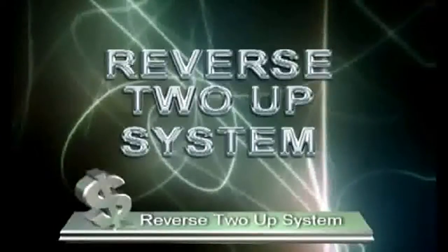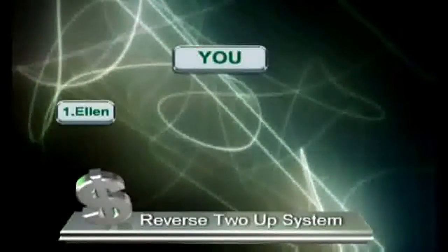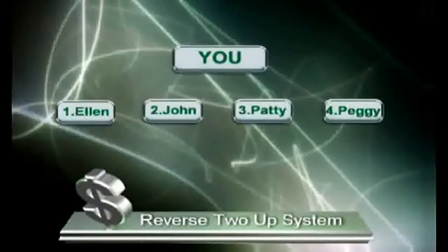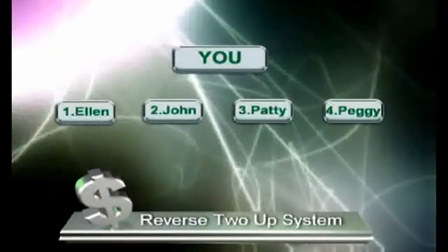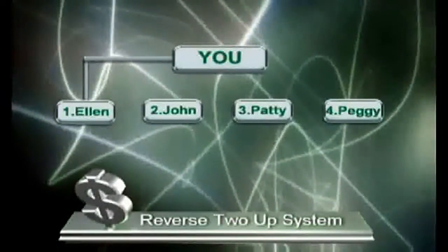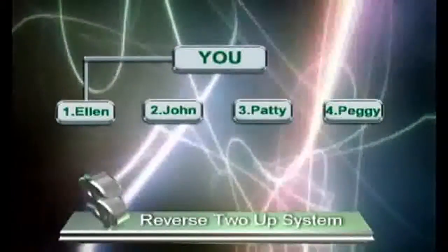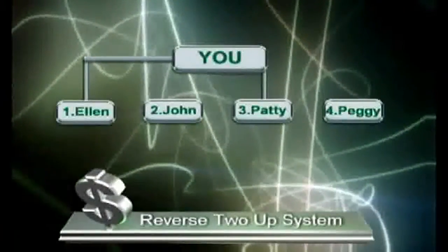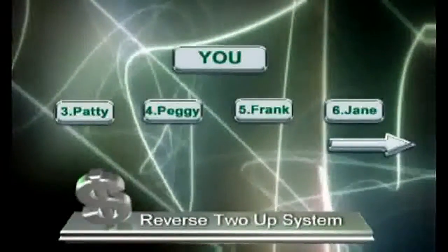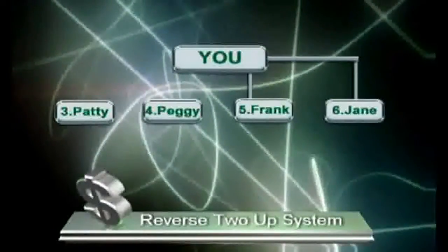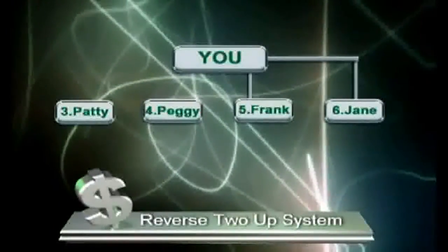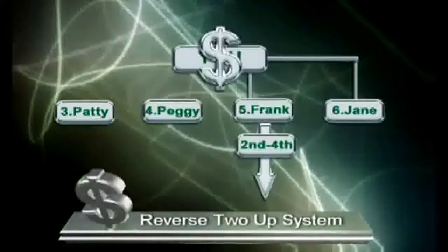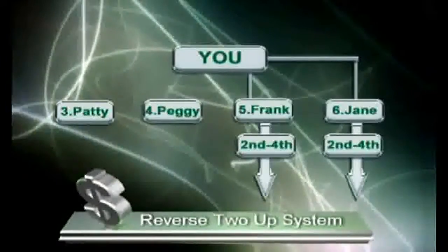The plan is called a reverse two-up system. Here's how it works. Let's say you refer Ellen, John, Patty, and Peggy. The reverse two-up is designed to send the funds to you first. So by referring Ellen, you have now received what you sent to your inviter. Patty, your third person, also sends to you. You can refer as many people as you'd like. Every person from the fifth person to infinity that you refer all stay direct to you, each sending the funds to you directly — and also referring their own referrals, who refer theirs, and so on to infinity.